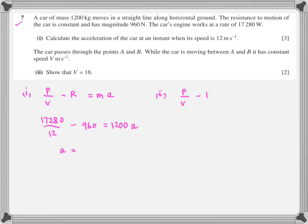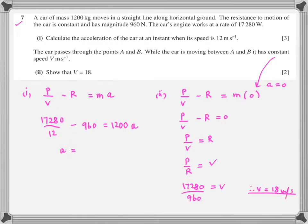It comes out to be something. Second part. The car passes through the points A and B. While the car is moving between A and B, it has a constant speed of V. We all have done the concept of constant velocity means zero acceleration. The same formula is there, but mass into acceleration. Since acceleration is zero, the right hand side of the equation is zero. Therefore, power over velocity is R. And I can say power over resistive force is velocity. Therefore, I'll prove my point. What the examiner has asked me to do, asked the students to do, V comes out to be 18 meters per second. So, two parts are done.